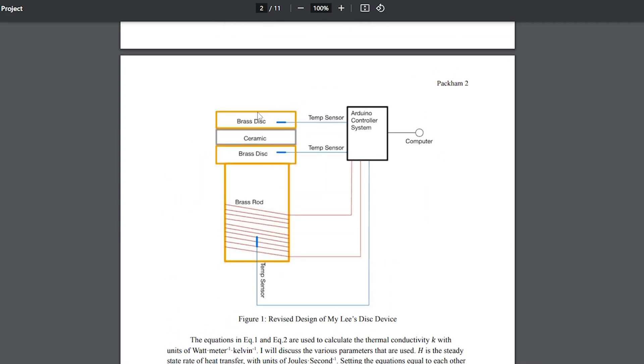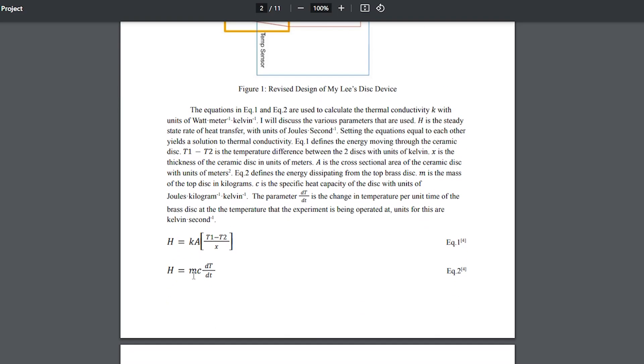Equation two measures the heat leaving the top brass disk via convection and radiation. The parameters here are the mass of the top brass disk, the specific heat capacity of it, and this rate of change of temperature of the top brass disk at a given temperature. Now, this is something that we're going to have to calculate with the specific top brass disk that we're using here. And I'll show you how to do this.